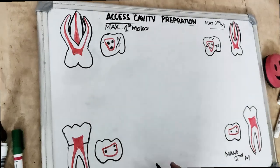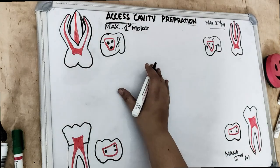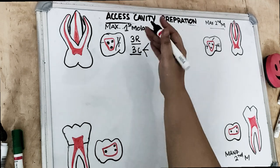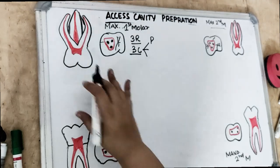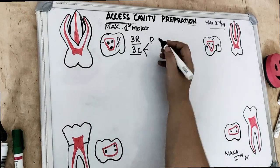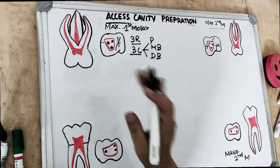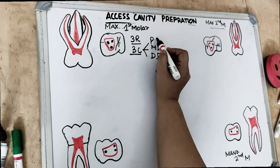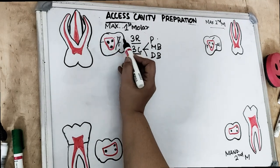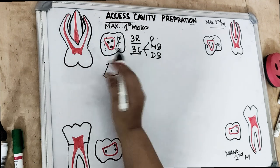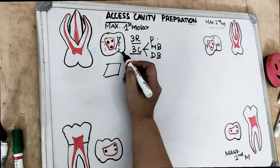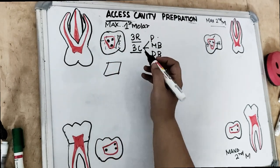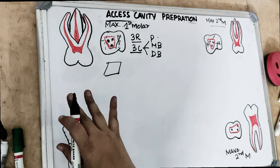Coming to the molars — we will cover first and second molars for maxilla and mandible, since the third molar pulp chamber anatomy is similar. The maxillary first molar has three roots and three canals. The palatal root is the biggest root — this applies to both the first and second molar. Buccally there are two roots: mesiobuccal and distobuccal. Palatally there is one root. The cuspal outline for the maxillary first molar is rhomboid, and there are four pulp horns corresponding to four cusps. The roof of the pulp is rhomboid in shape.